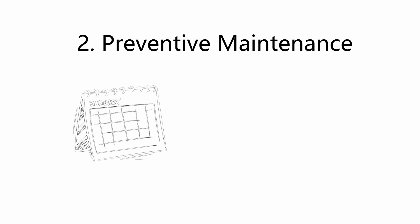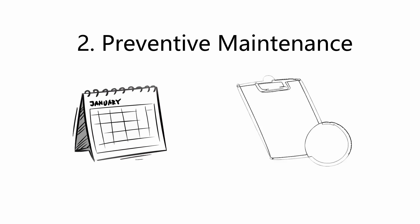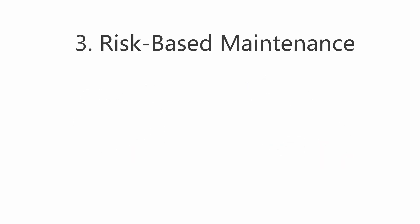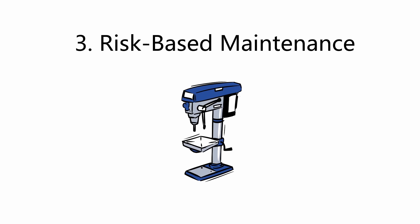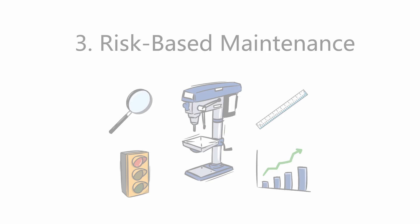Preventive maintenance is carried out at predetermined intervals or according to prescribed criteria, aimed at reducing the failure risk or performance degradation of the equipment. Maintenance cycles are planned according to the need to take the device out of service, and the incidence of operating faults is reduced. Risk-based maintenance is carried out by integrating analysis, measurement, and periodic test activities into standard preventive maintenance. All equipment displaying abnormal values is refurbished or replaced, extending useful life and guaranteeing high levels of reliability, safety, and efficiency.